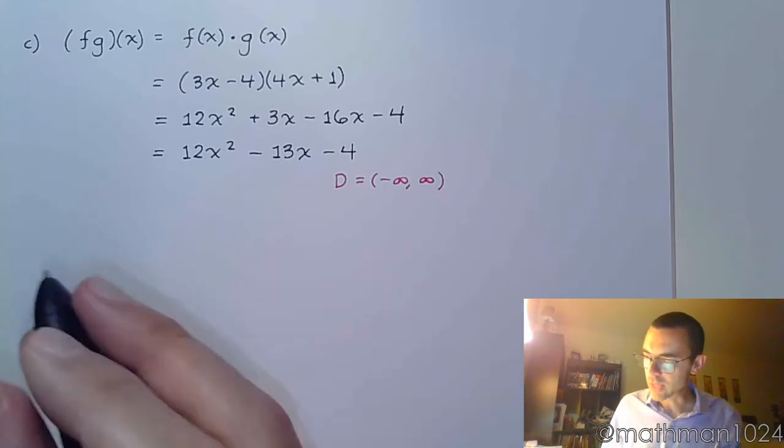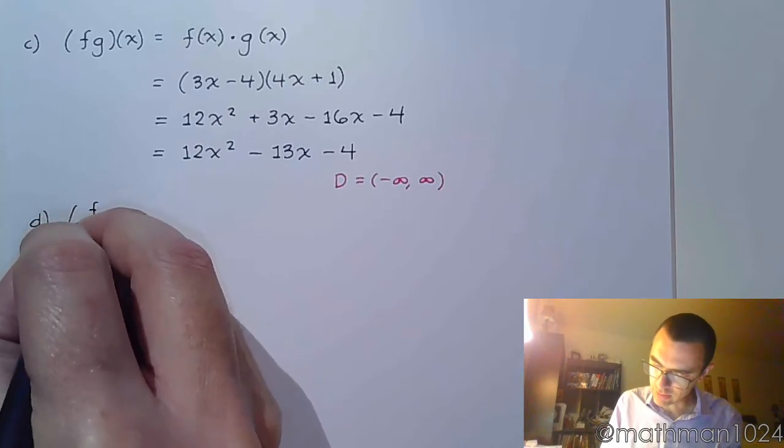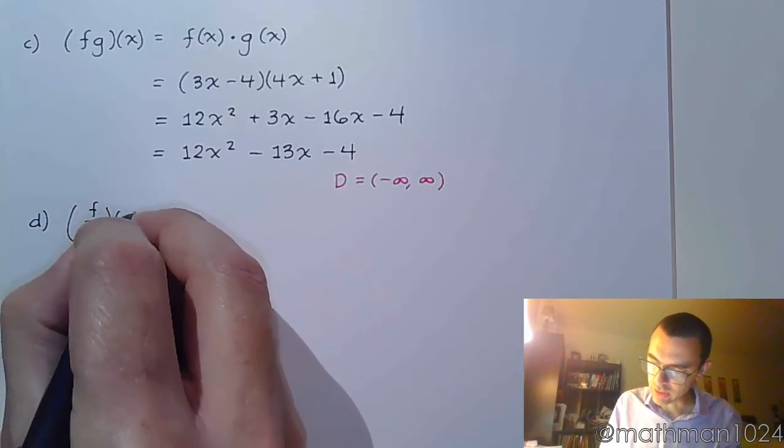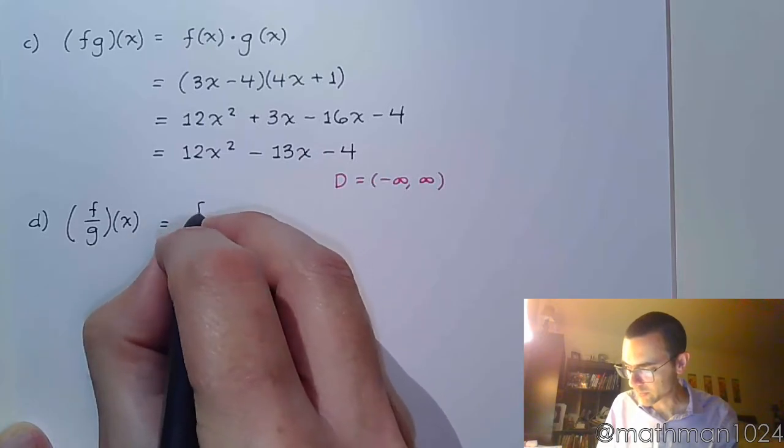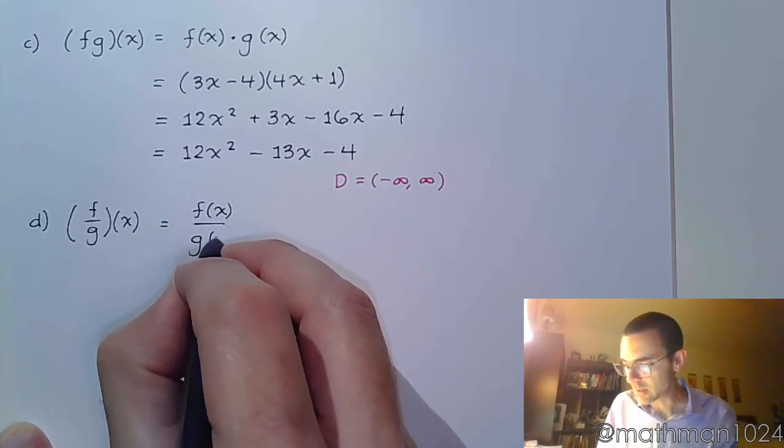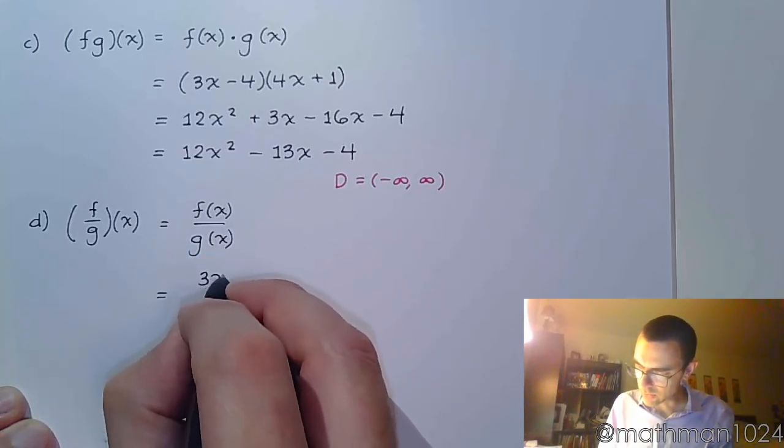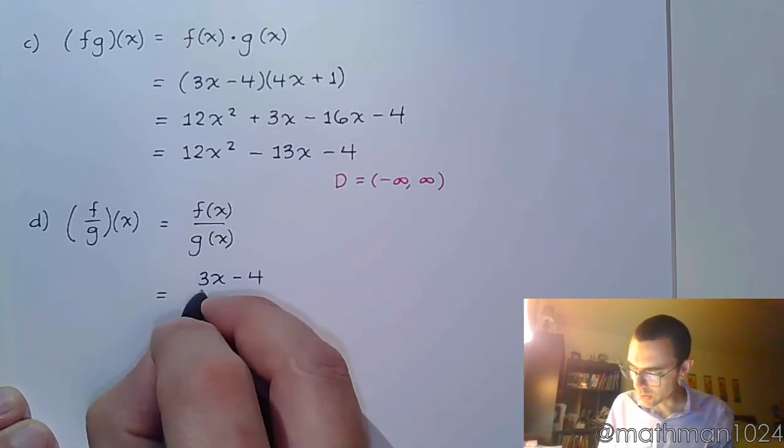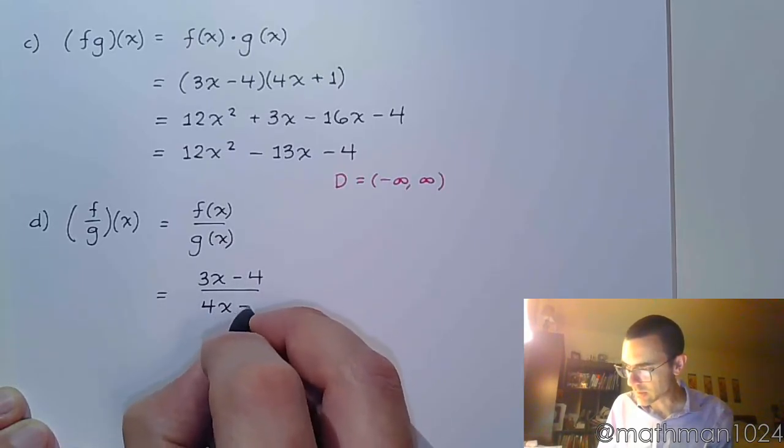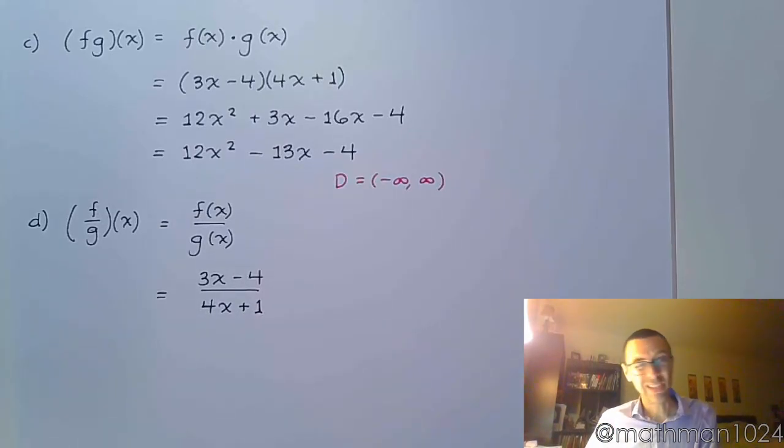Finally, let's look at doing division. So f divided by g of x, that means f of x divided by g of x. So the expression is 3x minus 4 over 4x plus 1. We can't simplify this. There's not really a whole lot for us to do. But now we need to talk about what our domain is.